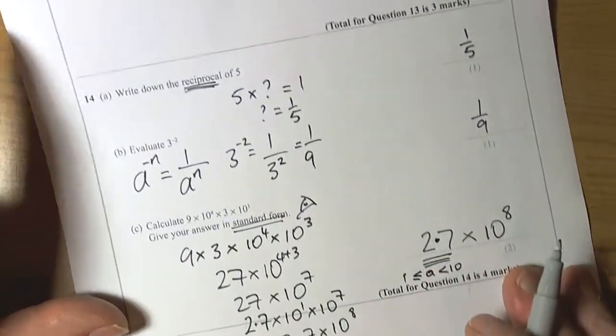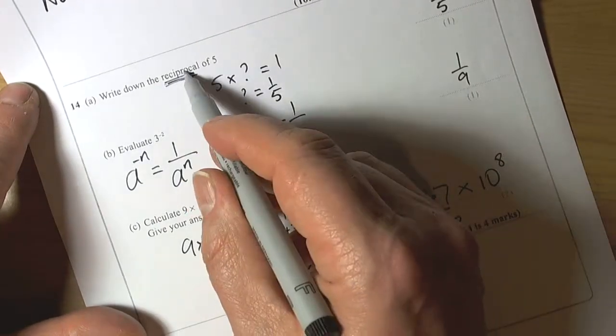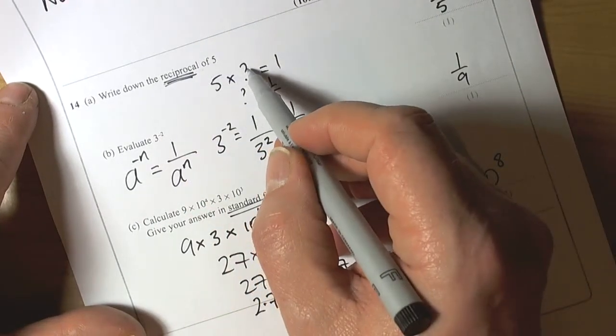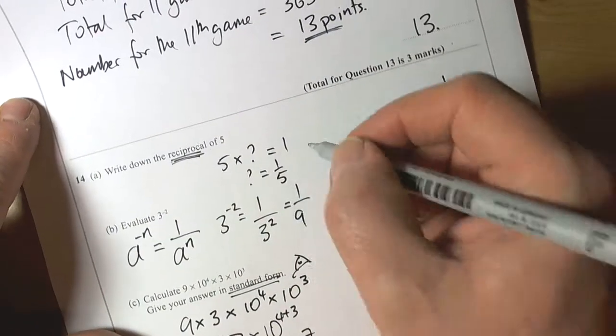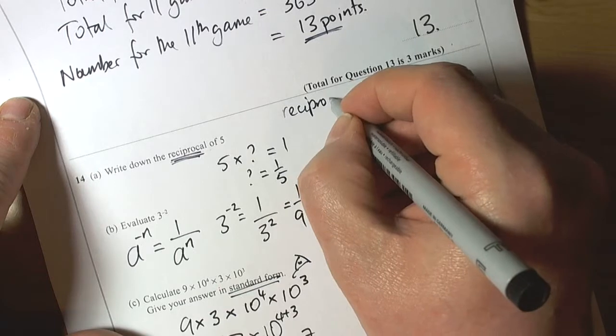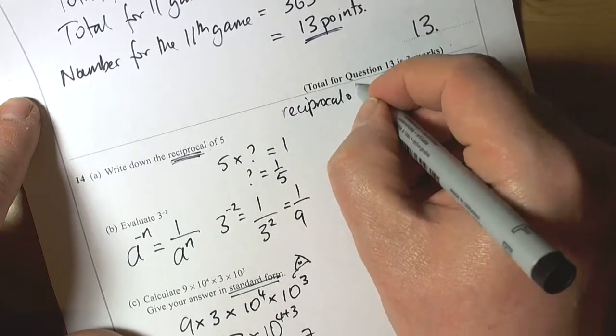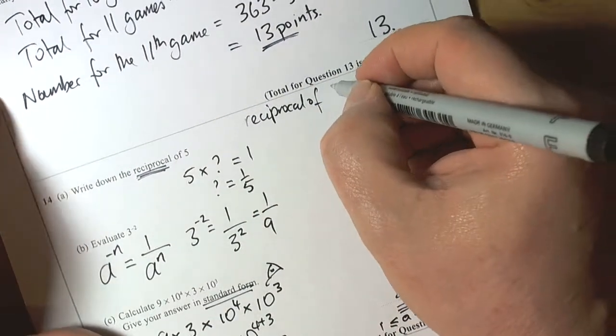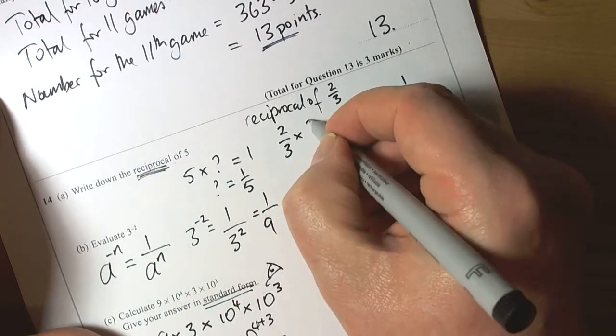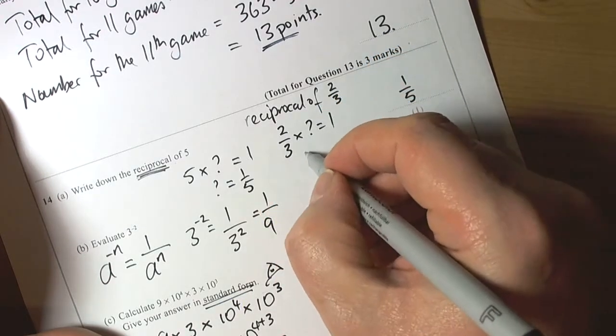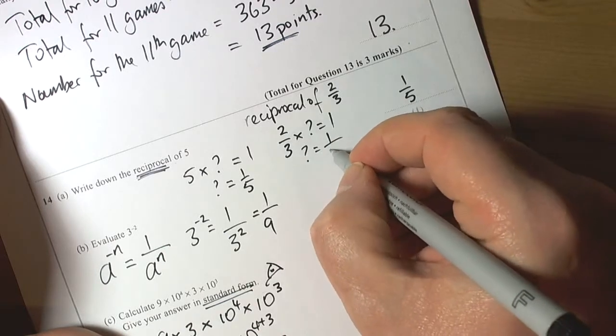Some special words: reciprocal. Whatever the reciprocal of a number is and times by that number will always give you an answer of one. For example, if I want the reciprocal of say two-thirds, then I'd be doing two-thirds times something equals one. That something will be one divided by two-thirds.